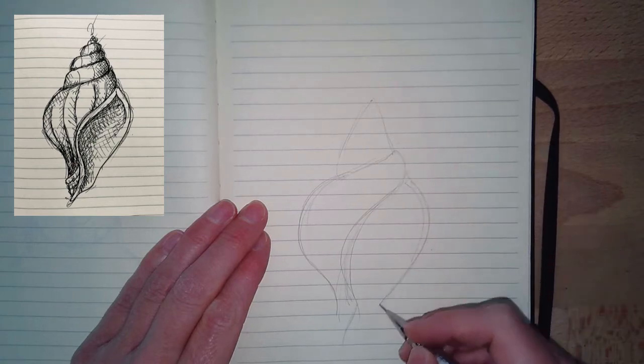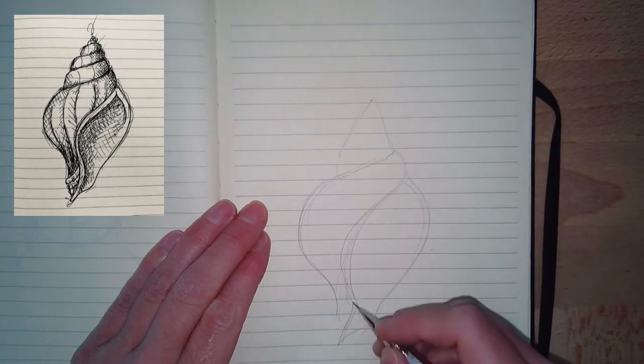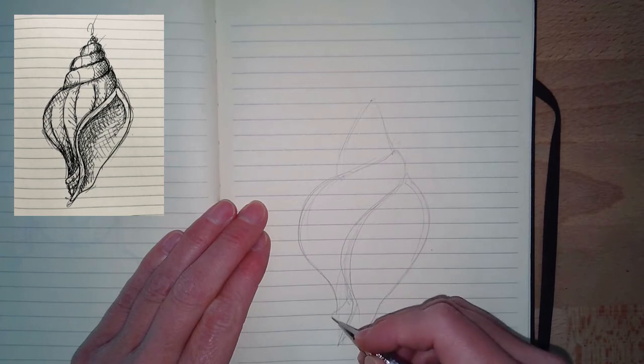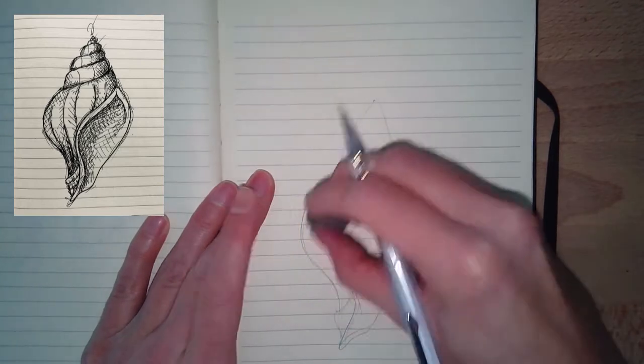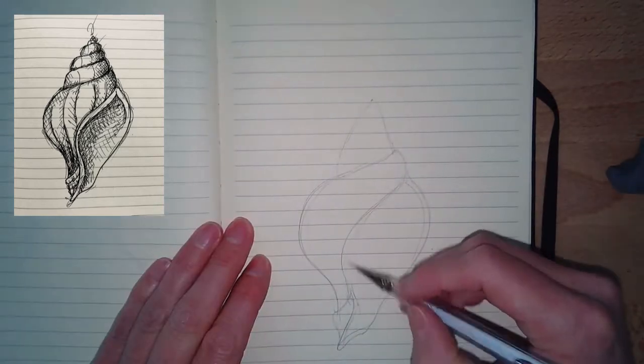Then we've got the opening of the seashell, and that is probably the biggest shape on the object, and then we've got just that little swoosh at the bottom where you've got some little tears that curve around.